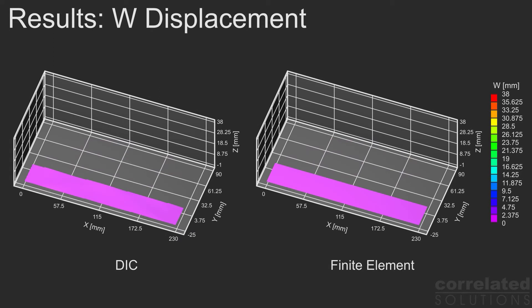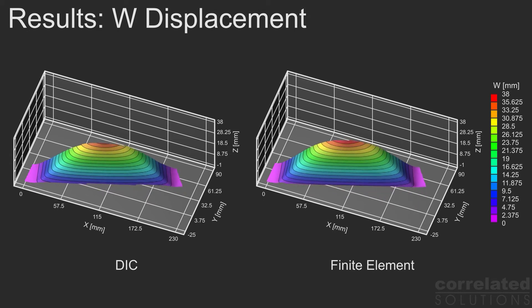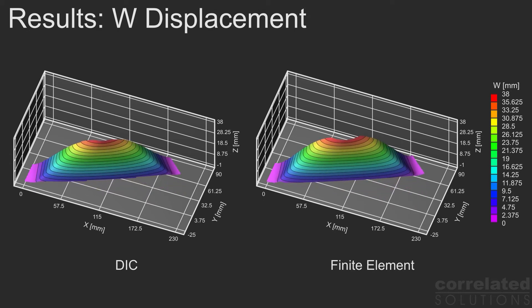The out-of-plane displacement, W, ranges between 0 and 38 millimeters, and is oftentimes called the buckled out-of-plane displacement. Again, we find that the displacement distributions look practically the same for the measurements and the model.